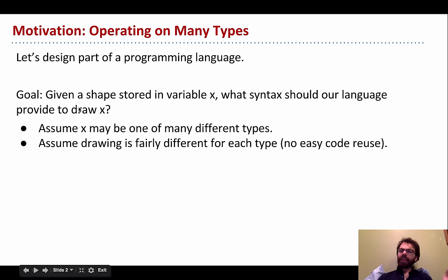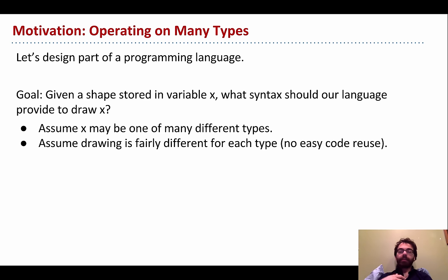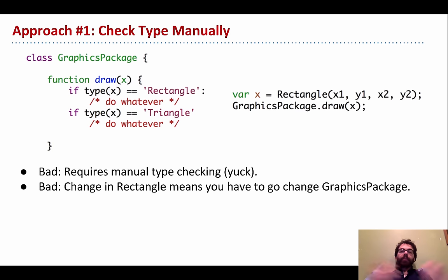We're going to back up a little bit and design part of a programming language from scratch. We'll assume that X can be one of many different types — it could be a horse, a triangle, a house — whatever things you might want to draw. We'll also assume that drawing is fairly different for each type, so there's not just one magic function that can draw everything.